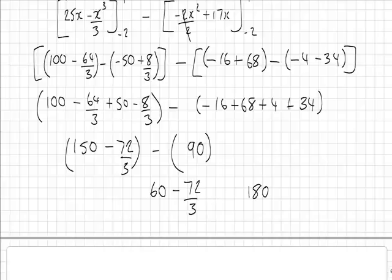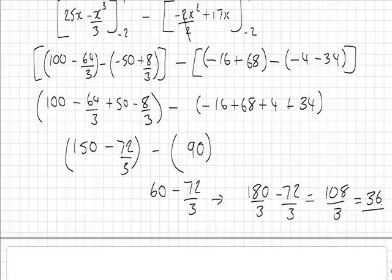Well 60 is 180 over 3, minus 72 over 3 is going to give us 108 over 3, which divide through by 3 should give us 36. So that's our area under the curve.